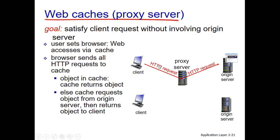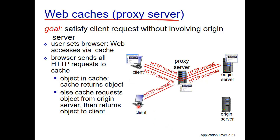A client sends an HTTP request to the proxy server. If no cached data matches, the proxy forwards the request to the original server, which sends a reply. The proxy stores a copy in its cache and forwards the reply to the client. On a subsequent request for the same page, the proxy serves it directly from cache without contacting the original server.